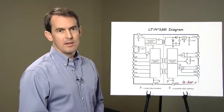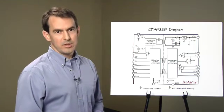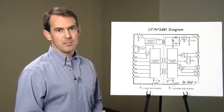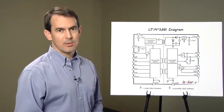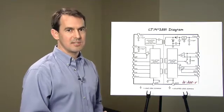A receiver failsafe feature defaults the output RO to a high mark one state when the inputs are shorted, open, or terminated, but undriven, as in a bus idle state. This can eliminate the need to pre-bias the bus lines, allowing flexible network expansion and the ability to truly support as many as 256 nodes.